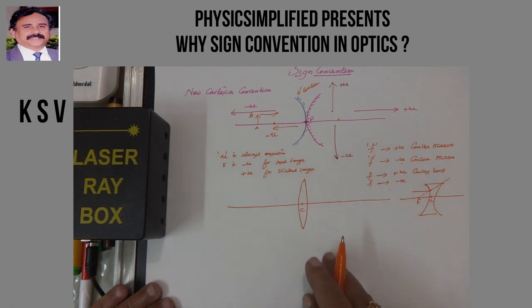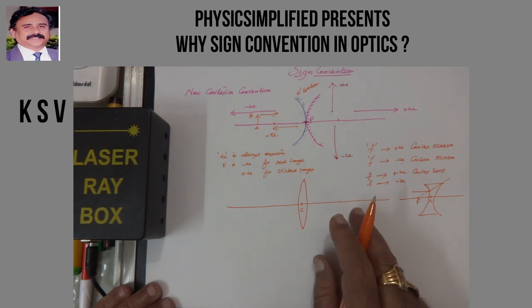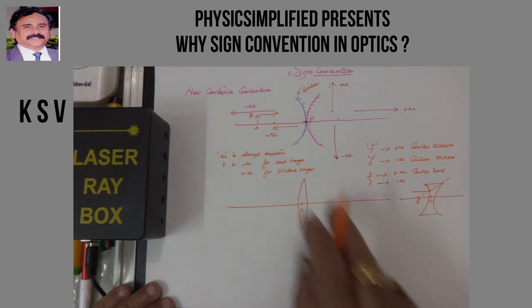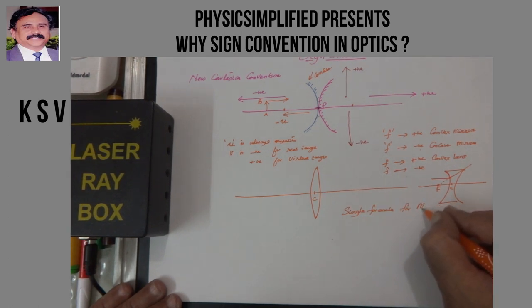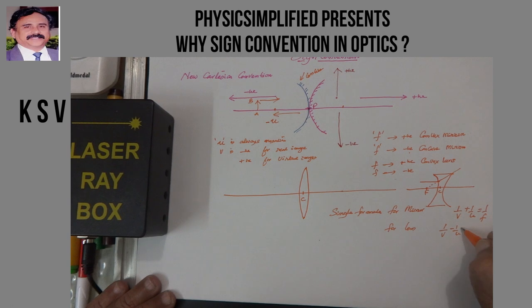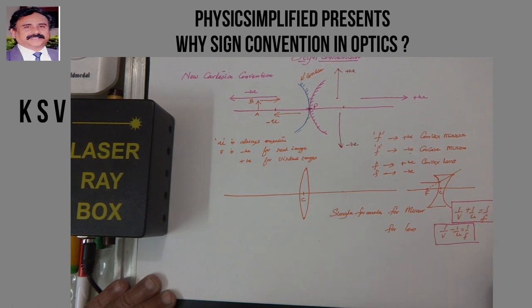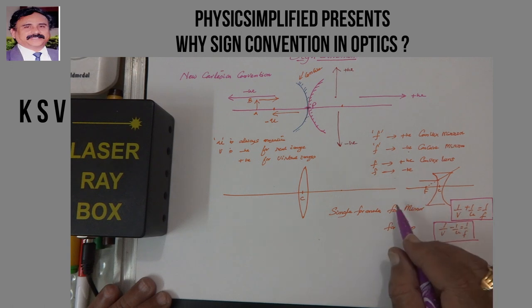People may have a doubt: when we derive any formula using sign conventions, why do we again use sign conventions when solving numericals? Because of the sign convention, we obtain a single formula for mirrors — 1/V + 1/U = 1/F — and for lenses — 1/V − 1/U = 1/F. These two formulae can be applied for any case, provided you follow the sign conventions properly as per the given situation.